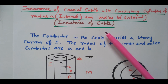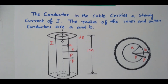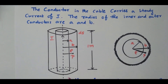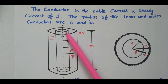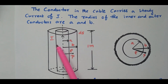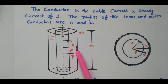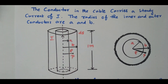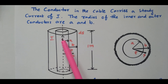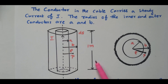The coaxial cable has two conductors A and B with radius A and B. Now referring the diagram: the axis is common for both inner and outer conductor. The inner conductor has radius A meters and the outer conductor has radius B meters. The current I is flowing through this conductor. We consider 1 meter length of cable.